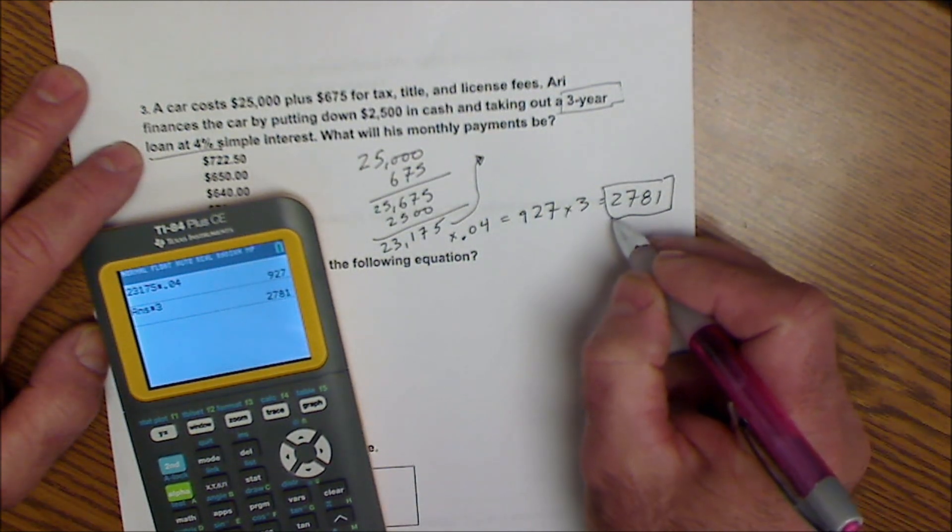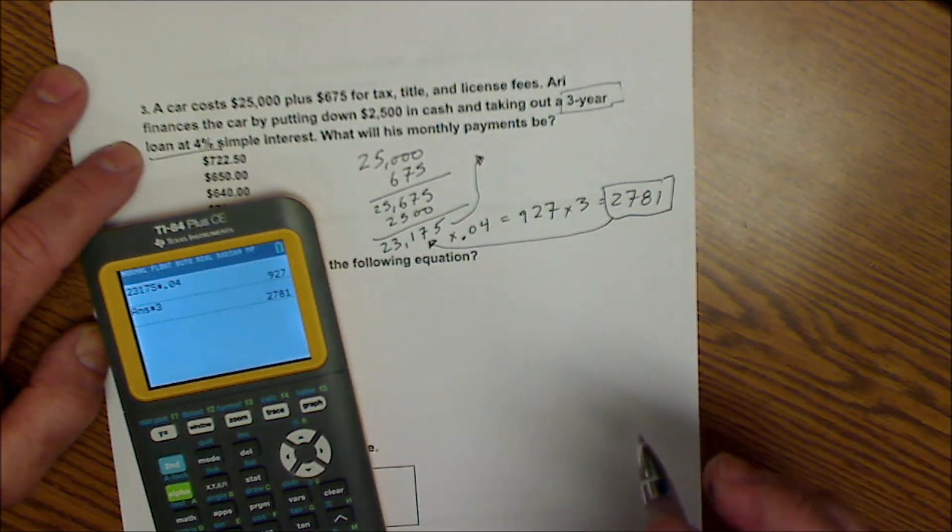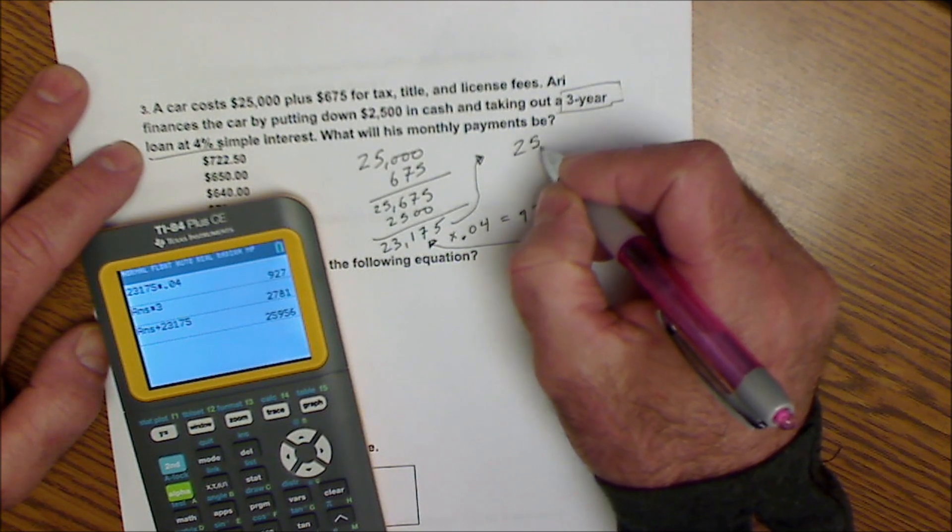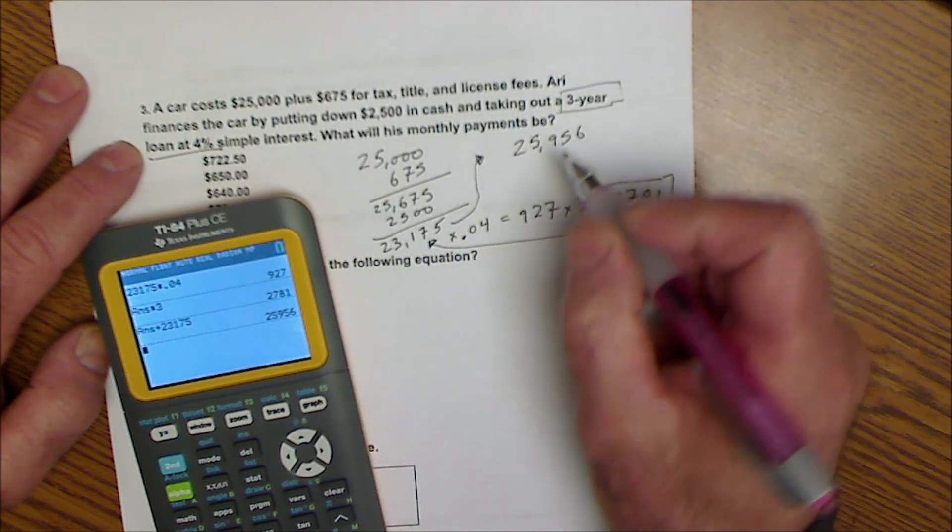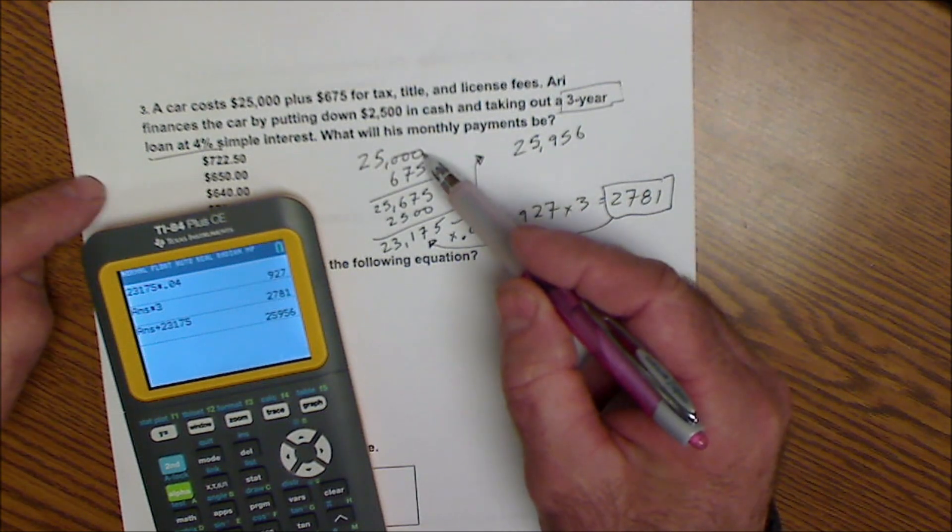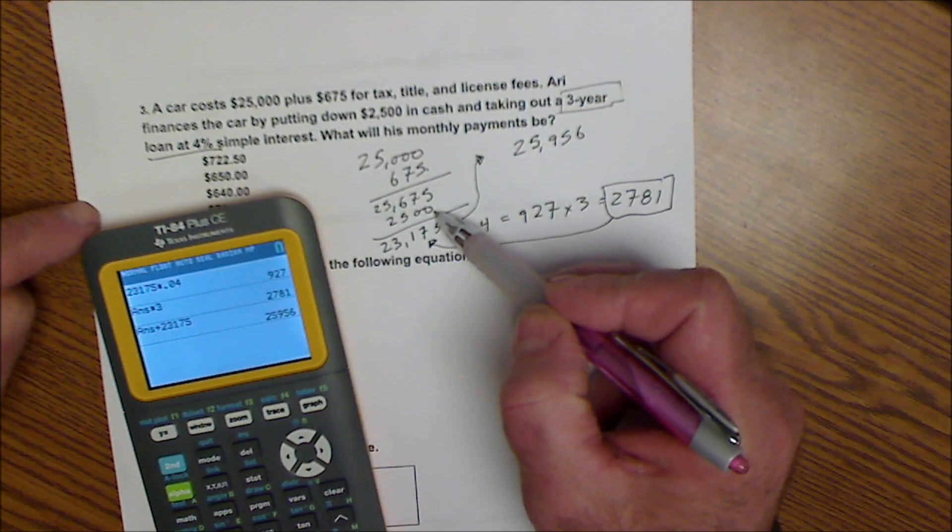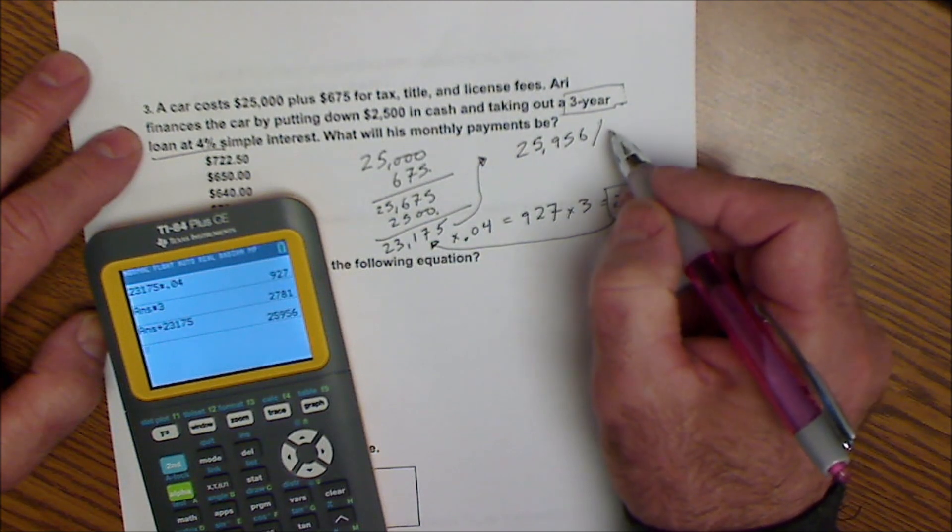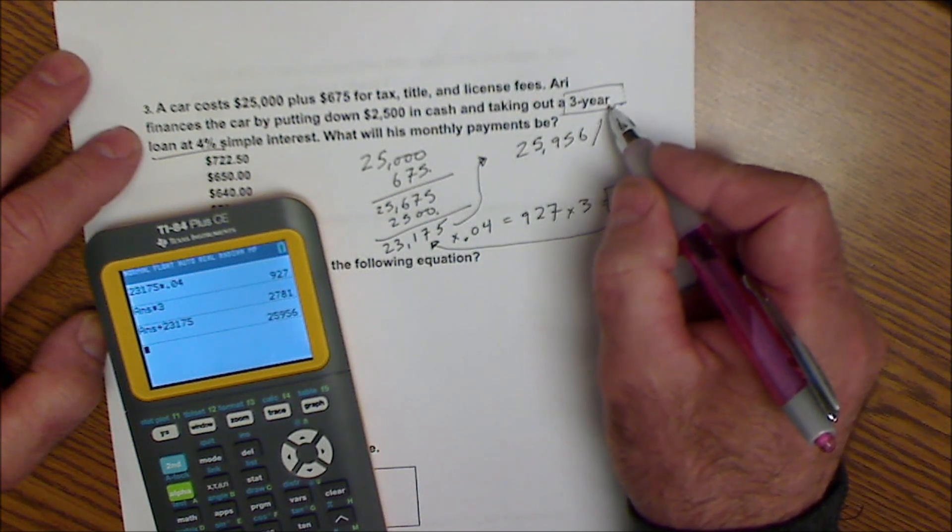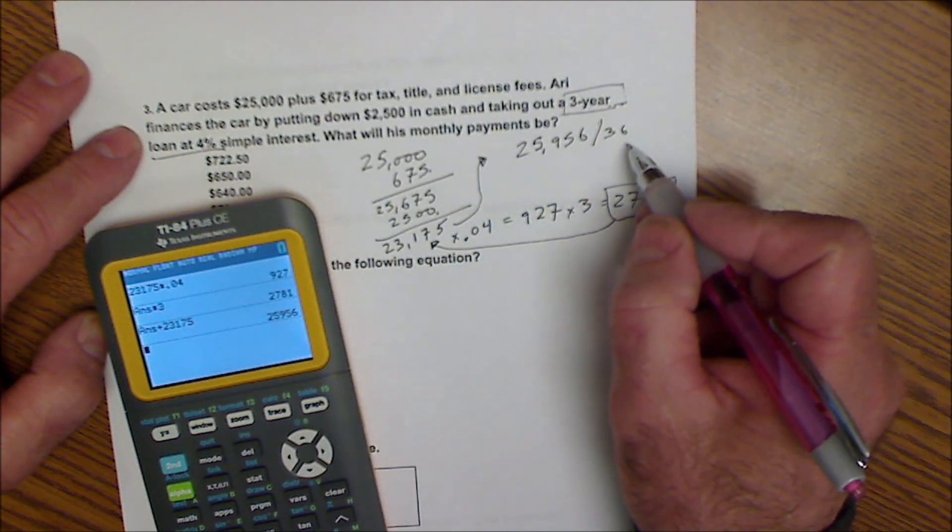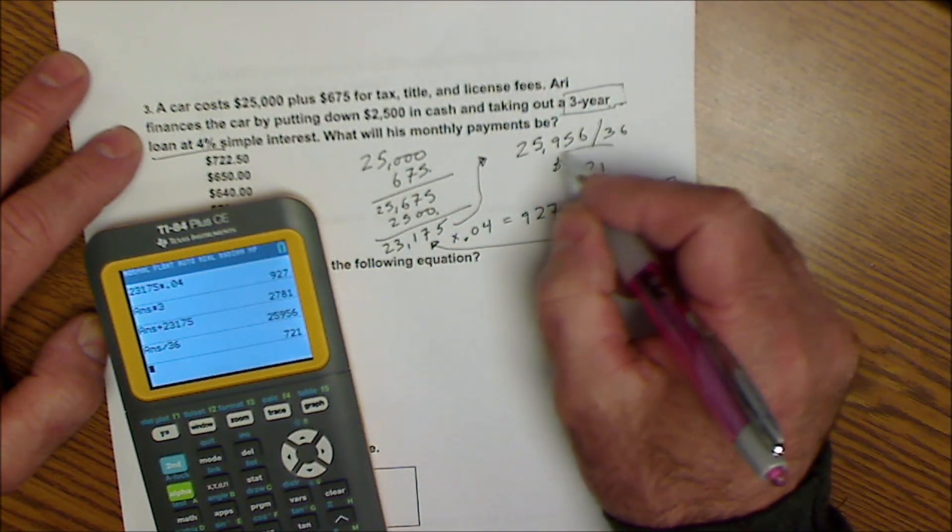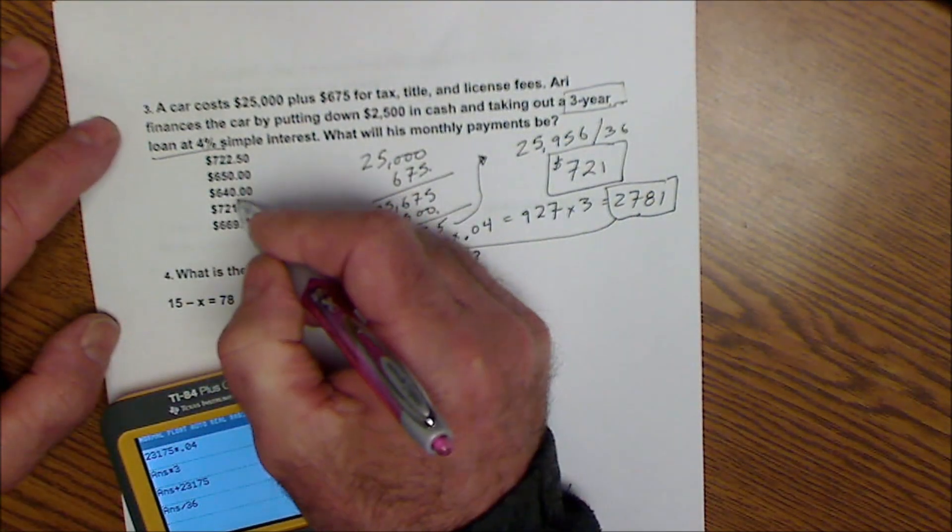So I take that total interest payment and I add it to my total amount due. So $2,781 plus the $23,175 is the total amount I'm going to finance, $25,956. So that is my car, my titles and fees, minus my down payment, plus all of my total interest over three years. So I take this amount, and I'm going to make monthly payments, 12 months in a year. So I divide this amount by the 36 months I pay it off. So I divide that by 36, and I get $721 per month. So there it is there.